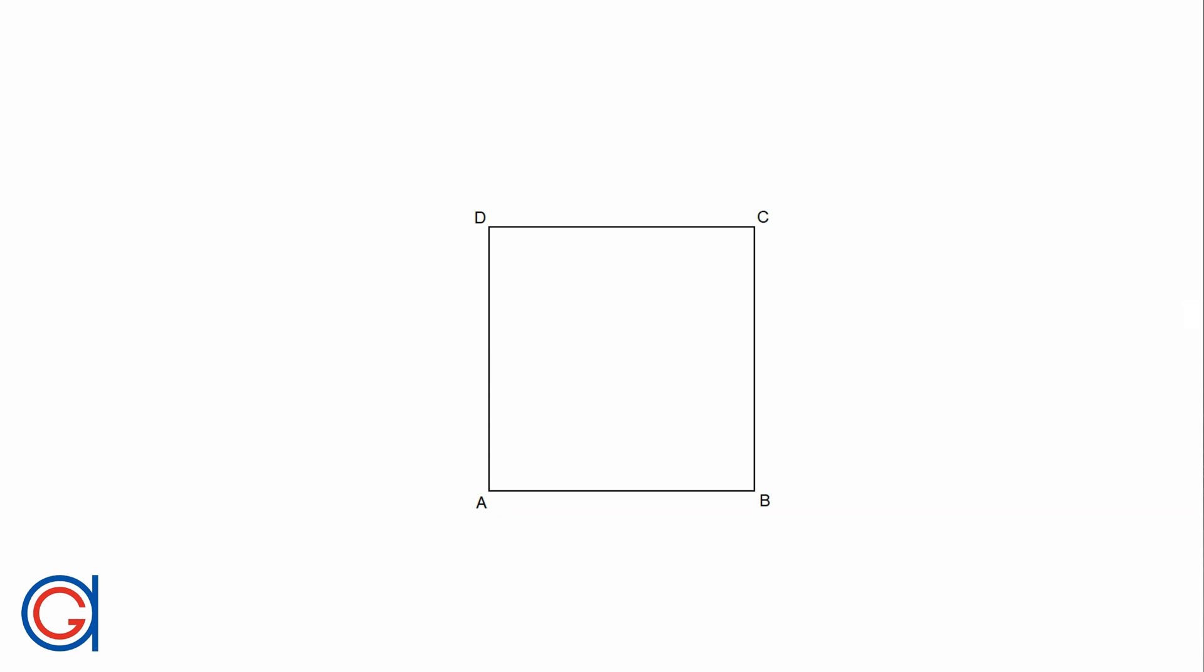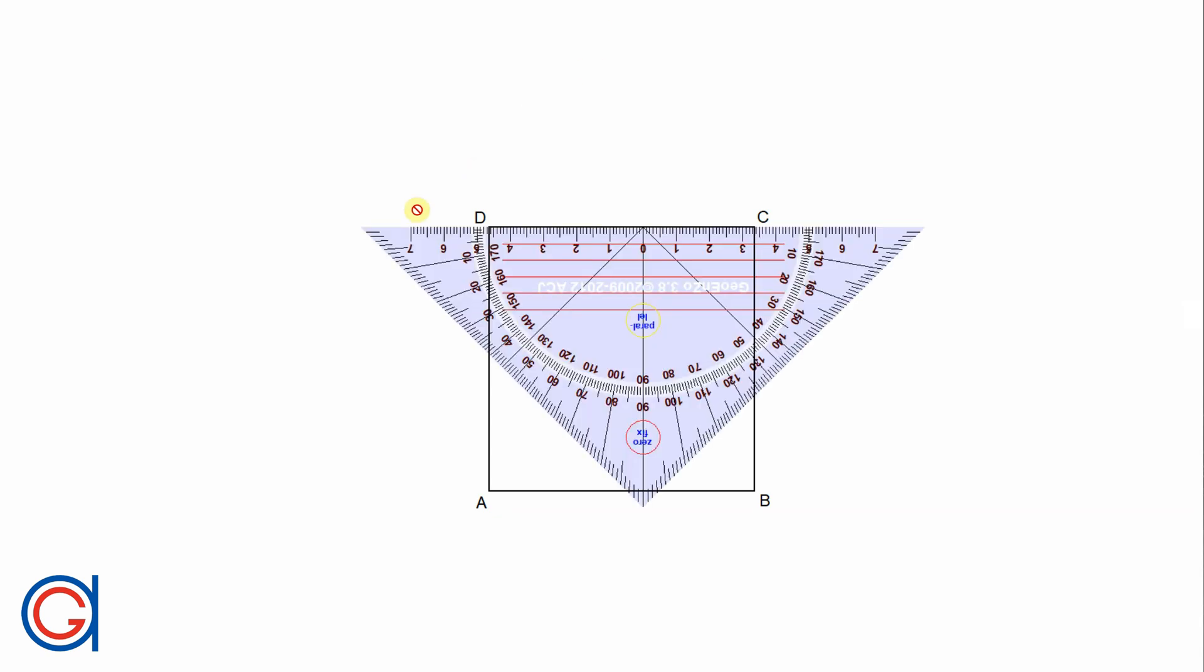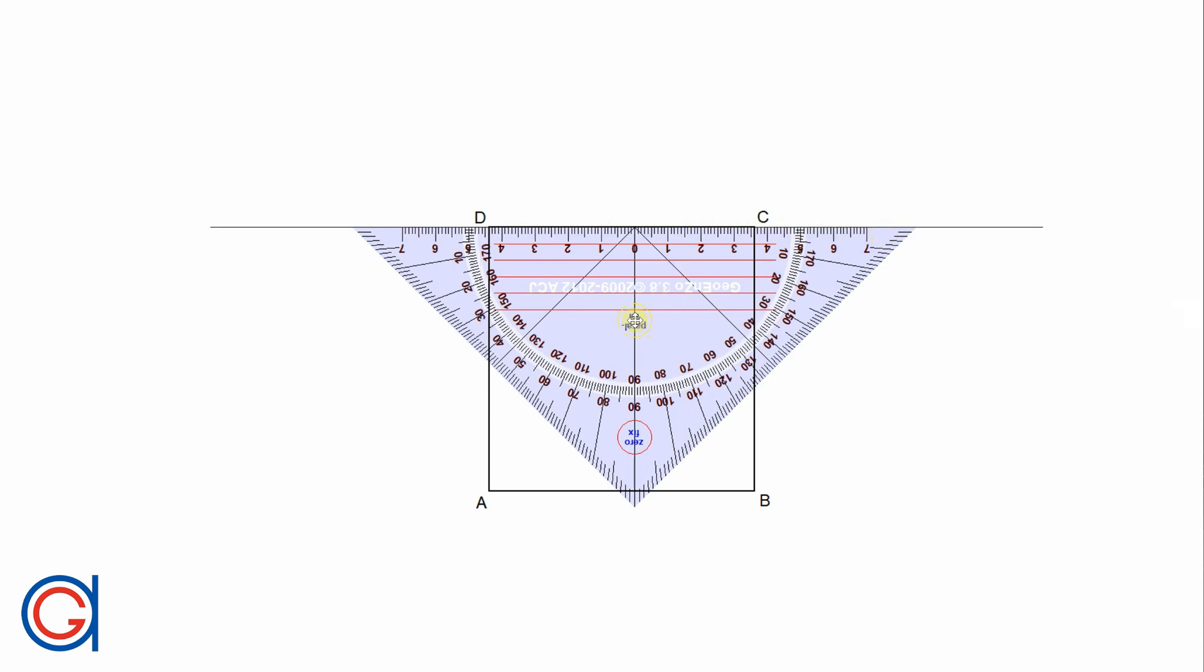Once we have this square ABCD, we start by elongating the top and bottom sides of the square to the left and to the right, as can be seen here on the screen.